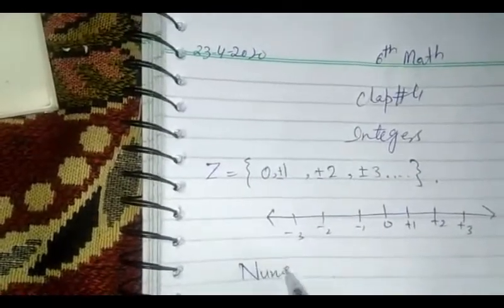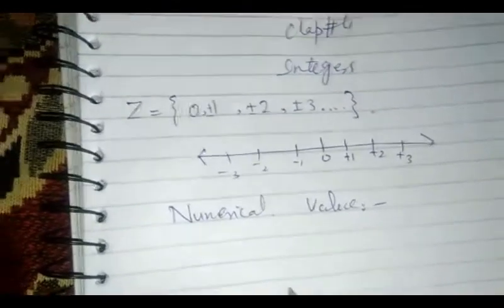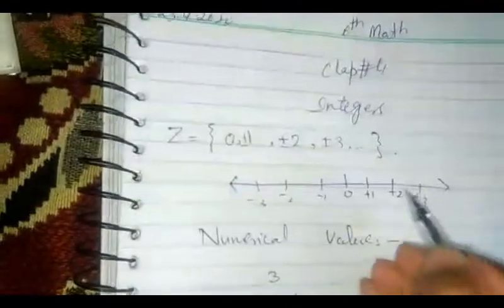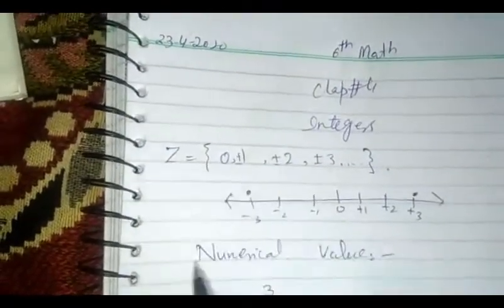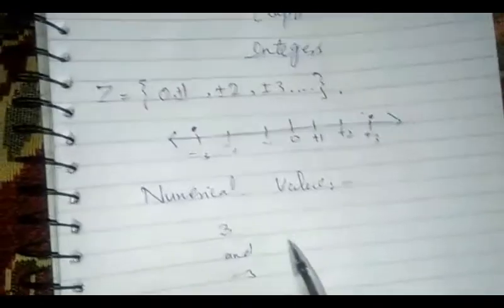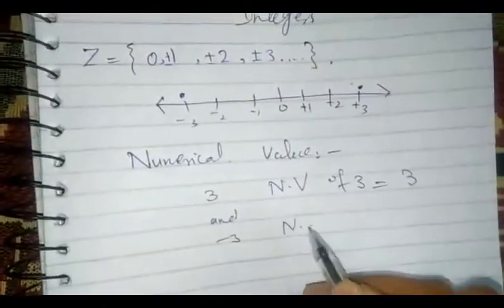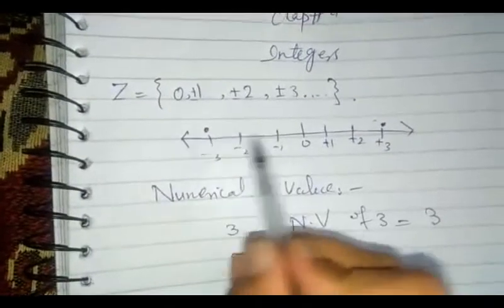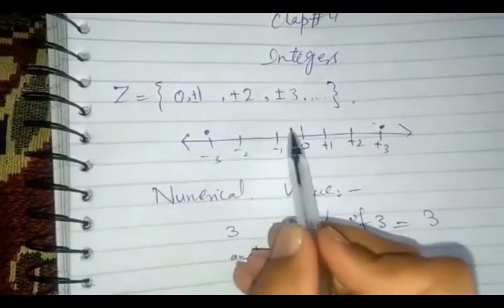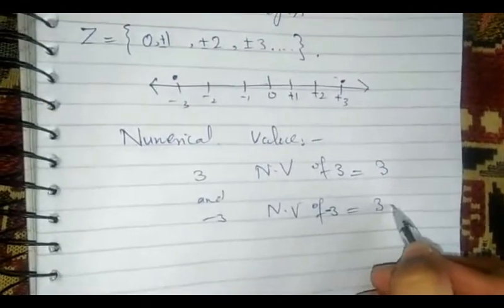The next topic is numerical value. The numerical value of any number is the distance of that number from 0 on the number line. For example, we want to write the numerical value of 3 and minus 3. The distance of positive 3 from 0 is 3, so the numerical value of 3 is equal to 3. Similarly, the distance of minus 3 from 0 on the number line is also 3, so the numerical value of minus 3 is also 3. Numerical value is always a positive integer.